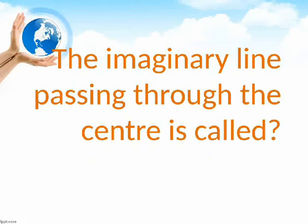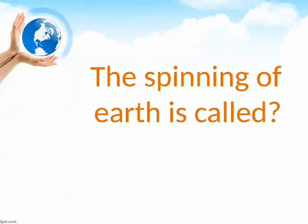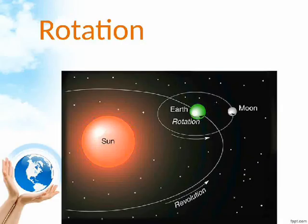The imaginary line passing through the center is called? Axis. The spinning of Earth is called? Rotation.